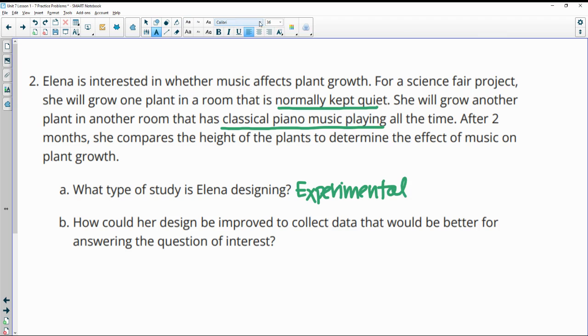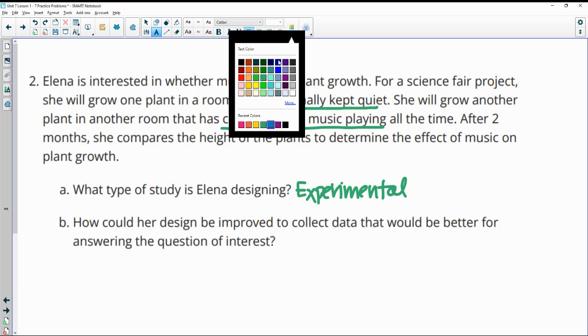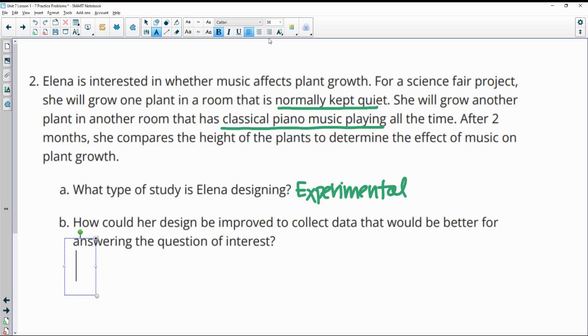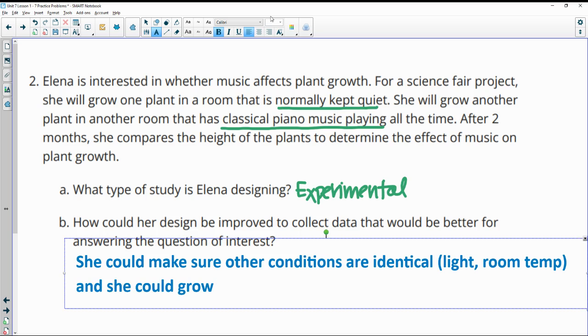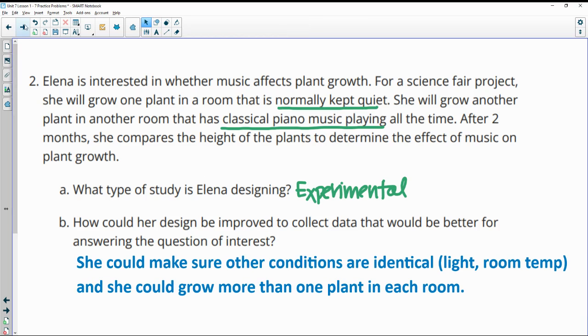And then how could she improve her design to get to answer the question better? She could make sure other conditions are identical, such as light, room temp, some of those other things that could impact growth. And she could also grow more than one plant in each room to just check if the impact is across the board on all plants or if it seems to be just impacting one type of plant. So those are a couple of things.